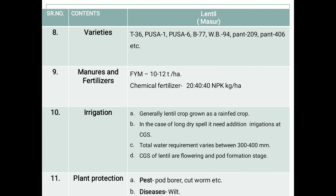Different improved varieties of lentil include T36, PUSA 1, PUSA 6, B77, WVU 94, PANT 209, PANT 406, etc. These are some of the improved varieties of lentil.